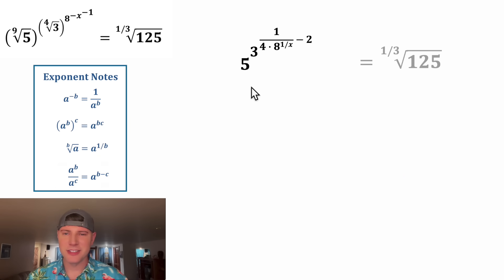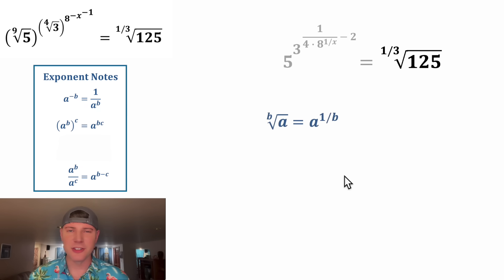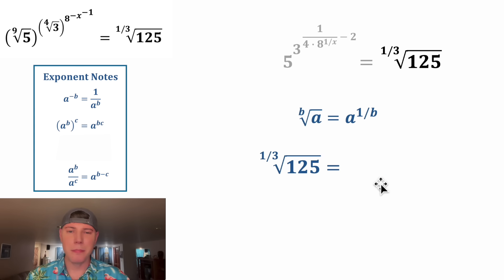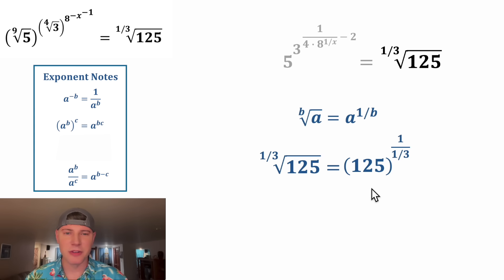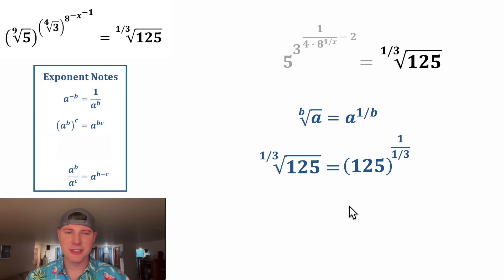Now let's look at the right-hand side. This is another radical, so we're going to use these rules. We have a base of 125 and a root of one-third, so this will equal a base of 125 raised to one over one-third. We can change it up here.